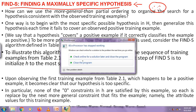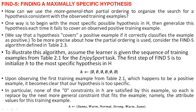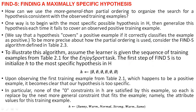Find-S means 'find specific.' Out of n number of hypotheses — both general and specific — the algorithm gives you the maximally specific hypothesis. This is very important from an exam point of view. We know that we have general hypotheses and we need to move toward specific. The Find-S algorithm converts the general hypothesis into the most specific one by searching the hypothesis space.